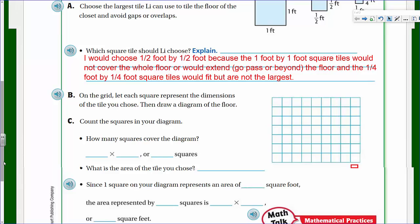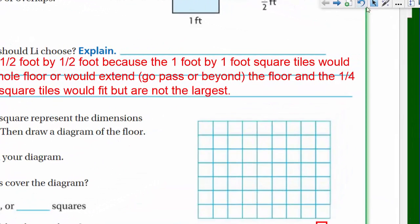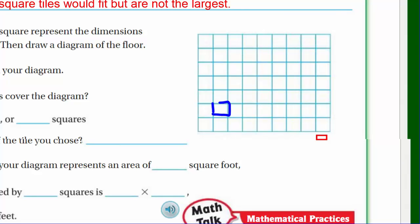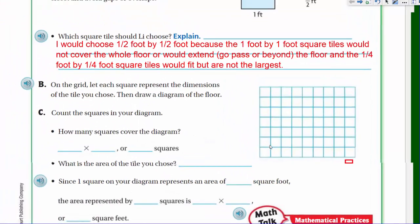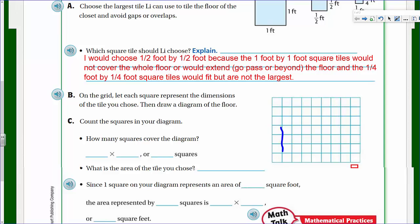Now B says on the grid, let each square represent the dimensions of the tile you chose — and we chose the half foot by half foot — then draw a diagram of the floor. So if we had a half foot tile, that square would represent a half foot by a half foot. I'll draw it over here: one half on this side, one half on that side, just like our diagram above. That means if that's a half foot, we need two and a half by three and a half. Here's two and a half this way: a half, one, one and a half, two, two and a half. And three and a half the other way: one half, one, one and a half, two, two and a half, three, three and a half. Ultimately this will be our diagram right there.